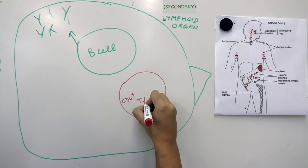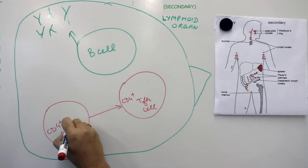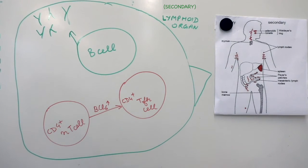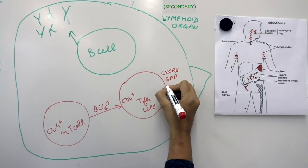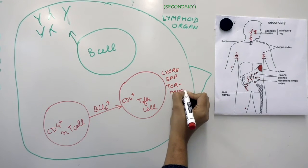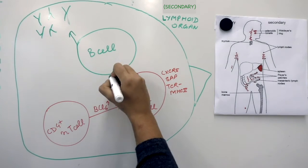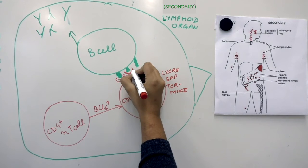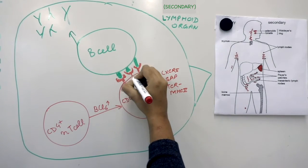Specifically from follicular T helper cells within the lymphoid organs, these cells differentiate from naive CD4-positive T cells upon upregulation of BCL6. The TFH cells also upregulate CXCR5 and SAP surface markers, placing them in close proximity to B cells. This allows TCR-MHC2 interactions between the two cell types, along with ICOS, PD1, and CD40L signaling.